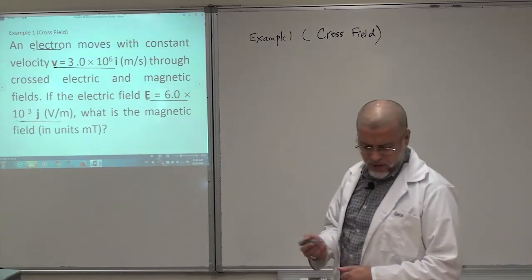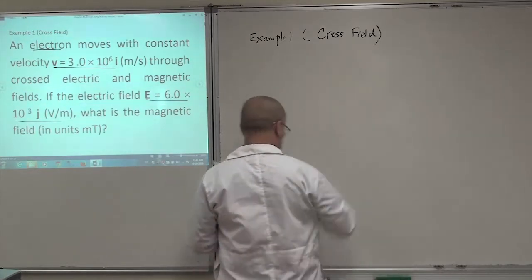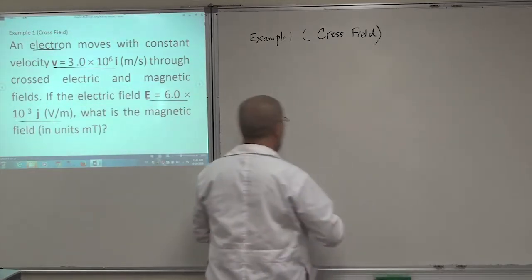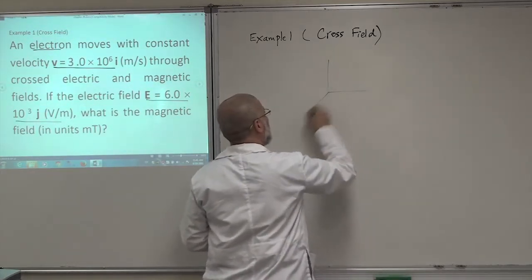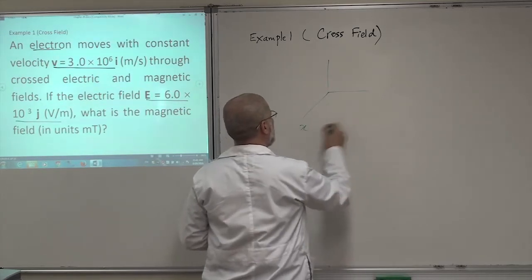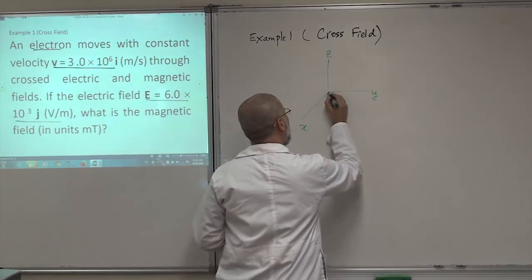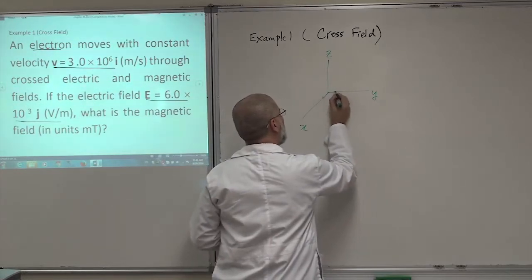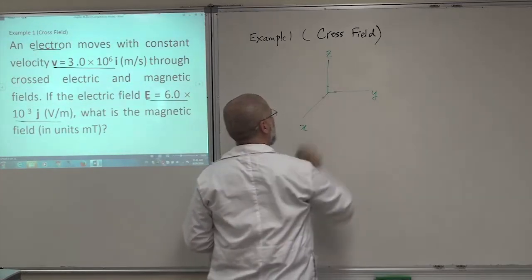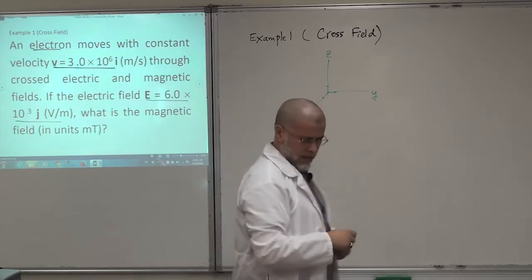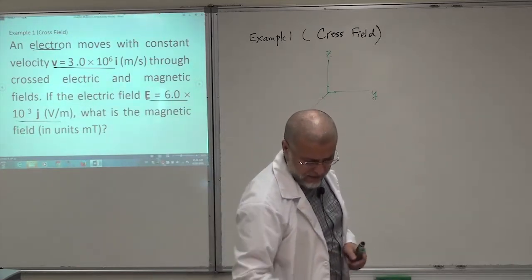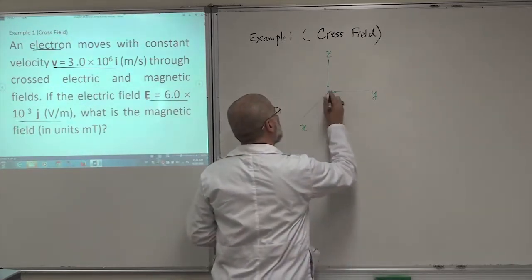Let's first of all draw a figure here quickly. An X, Y, Z plane. That's X, that's Y, and that's Z axis. This is unit vector I, this is unit vector J, and this is unit vector K. You should know these things. Now, my electron is sitting here.